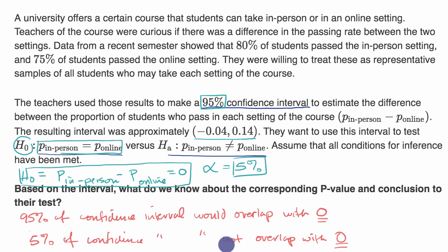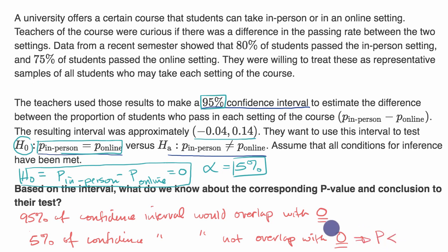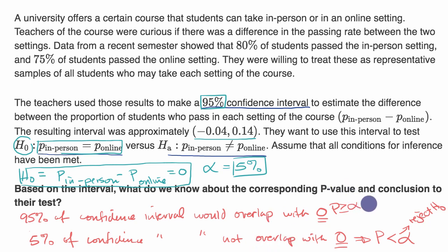So if you construct a 95% confidence interval and it does not overlap with the assumed null hypothesis difference of zero, your p-value will be less than the 5% significance level and you reject the null hypothesis. If it does overlap with zero, your p-value is greater than or equal to alpha and you fail to reject the null hypothesis.